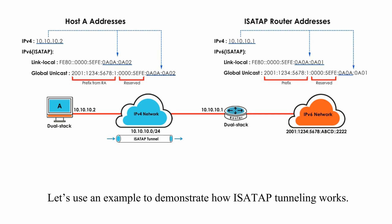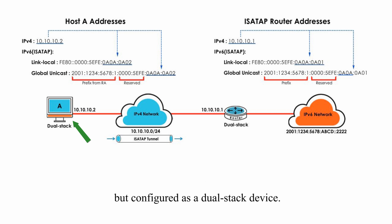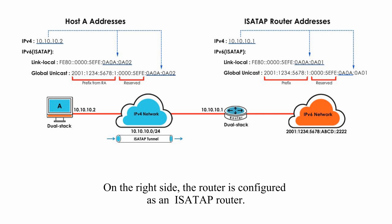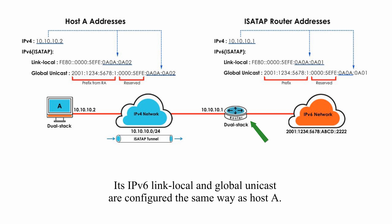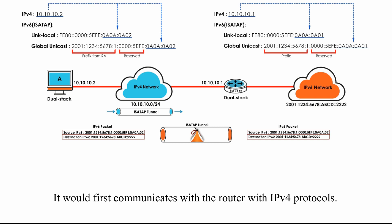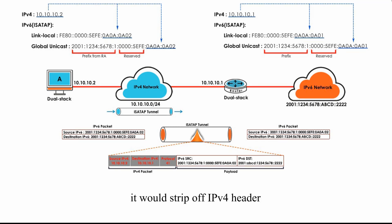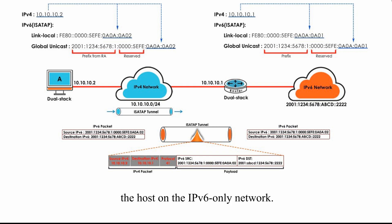Let's use an example to demonstrate how ISATAP tunneling works. On the left side is Host-A, which is sitting on an IPv4 network but configured as a dual-stack device. On the right side, the router is configured as an ISATAP router. Its IPv6 link local and global unicast addresses are configured the same way as Host-A. When Host-A sends a packet to any host on the IPv6-only network, it would first communicate with the router using IPv4 protocols. When the router gets the IPv4 packet, it strips off the IPv4 header and then delivers the IPv6 packet to the host on the IPv6-only network.